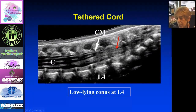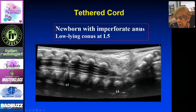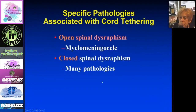Here is another tethered cord in a patient with imperforate anus — the cord is at L5 with a normal shape, but that position is tethered. Specific pathologies that can tether the cord include myelomeningocele, open dysraphism, and closed dysraphism, with many subtypes in each category.